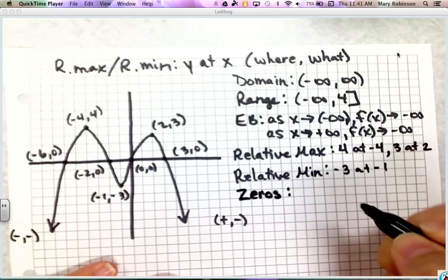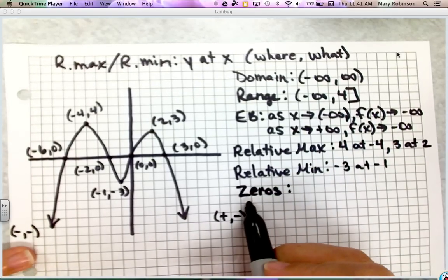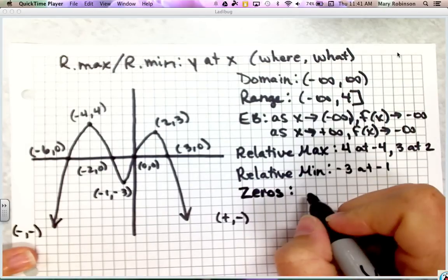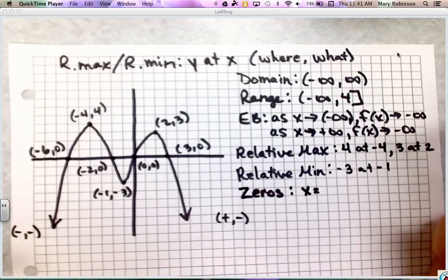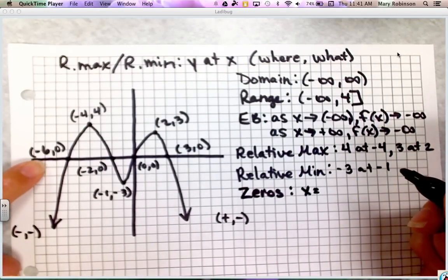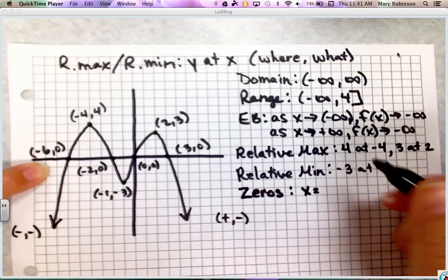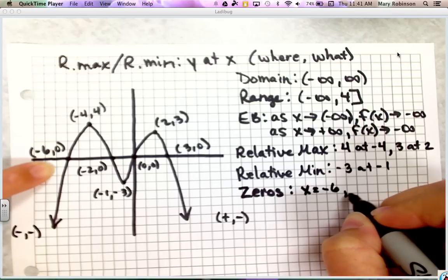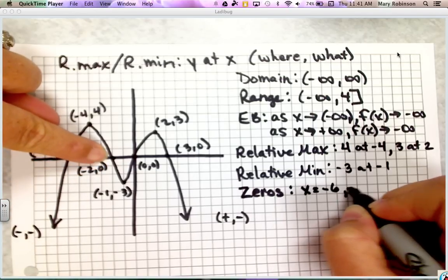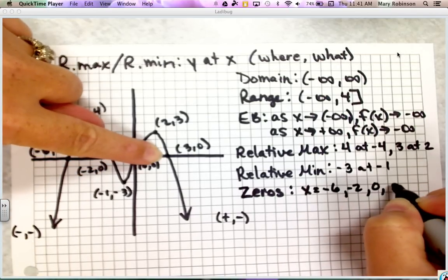The next thing to list when analyzing characteristics of a polynomial function are the zeros. You can write them as ordered pairs or simply state that x equals these values. Looking along the x-axis from left to right, our zeros are at x = negative 6, negative 2, 0, and positive 3.